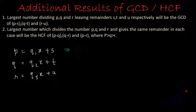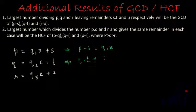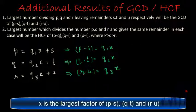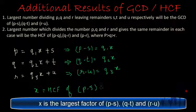From the first equation we can write P minus S equals Q1 times x. Similarly from the second equation we can write Q minus T equals Q2 times x. And from the third equation we can write R minus U equals Q3 times x. That means x divides P minus S, Q minus T, and R minus U completely — so x is a factor of all three. For x to be the largest number, x has to be the HCF or GCD of P minus S, Q minus T, and R minus U.